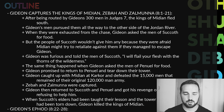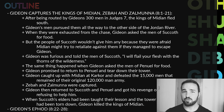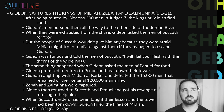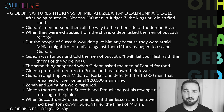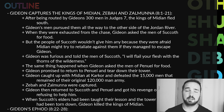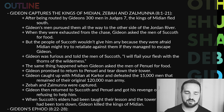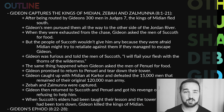Gideon's men were exhausted, so Gideon stopped at Succoth and asked the men there to give his soldiers refreshment — food. But the men of Succoth said no, they didn't want to do that. What if Gideon didn't capture the kings of Midian and they came back for revenge? They didn't want to have been the people who gave help to the rebels. Gideon was furious at this, and he told the men of Succoth: 'I will flail your flesh with the thorns of the wilderness.'